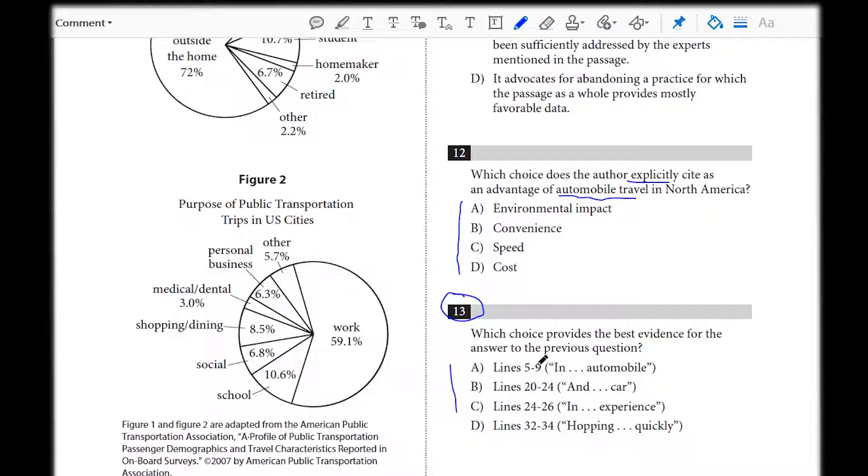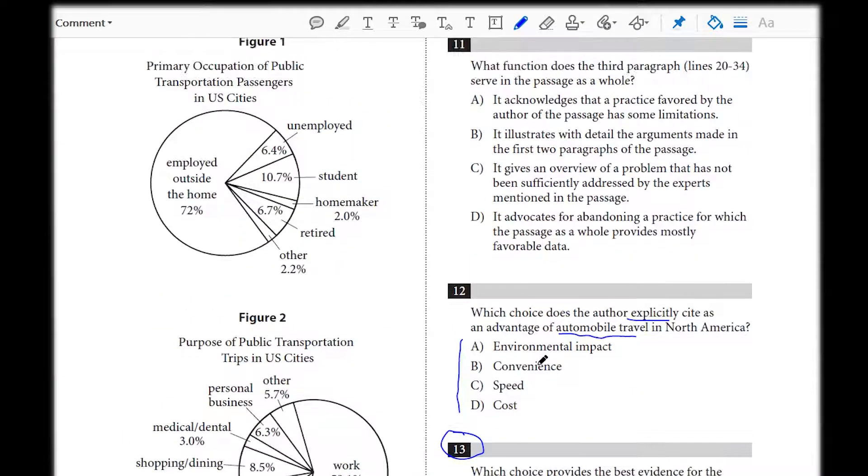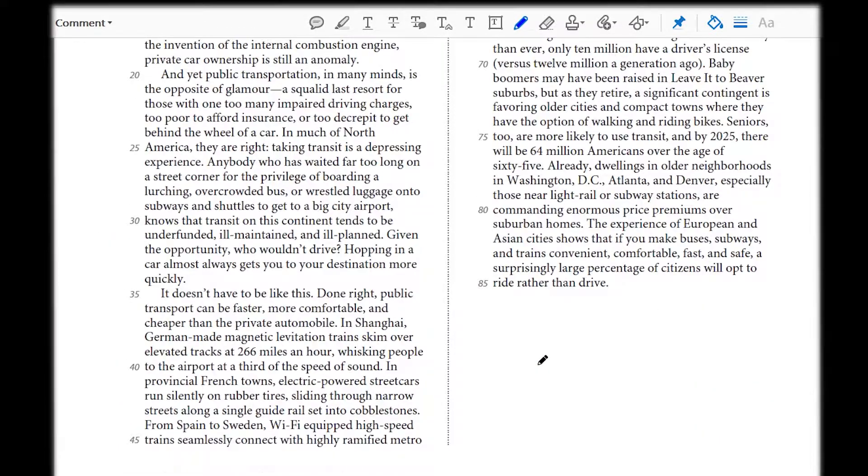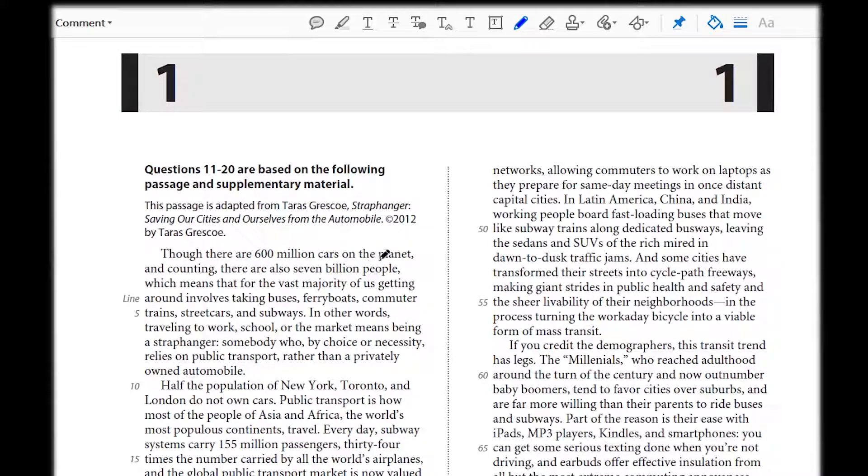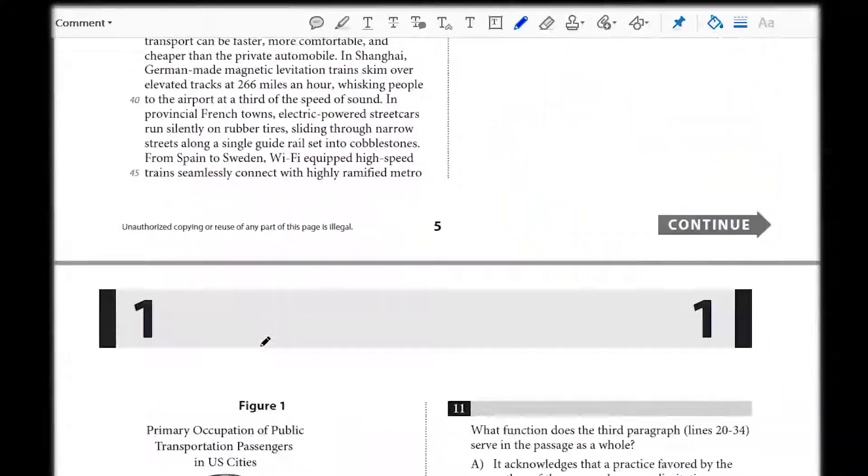Let's go look at lines five through nine here and see if we can find an explicit benefit of automobile travel. Five through nine starts with, in other words, traveling is someone who has to be a strap hanger. By choice is using public transportation. Okay, not a benefit of the automobile. Definitely not A.